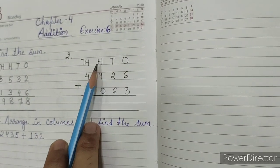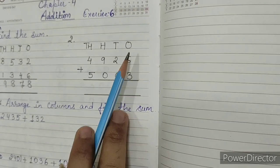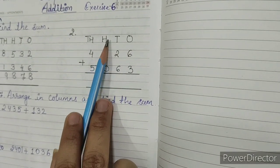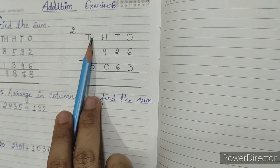Find the sum. Ones, tens, hundreds, thousands. Now 6 is in ones place, 2 is in tens place, 9 is in hundreds place, and 4 is in thousands place.